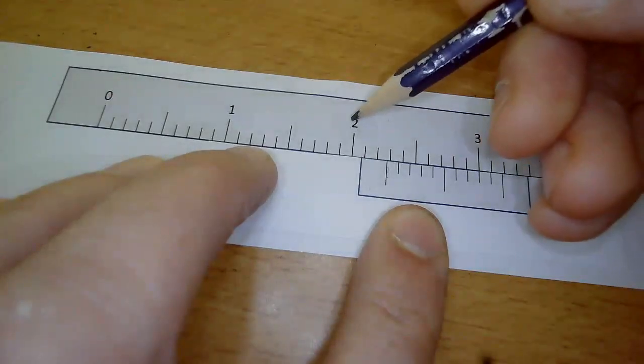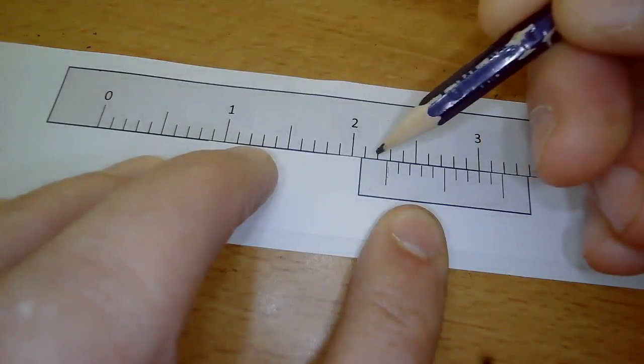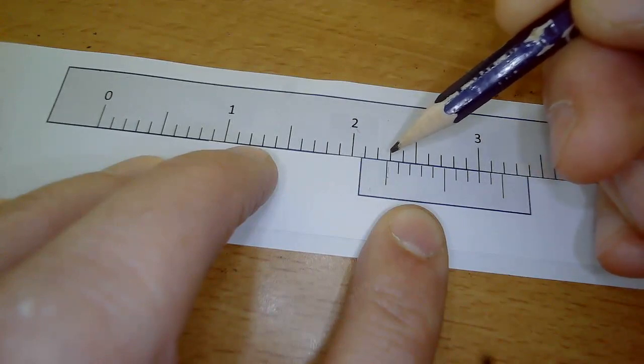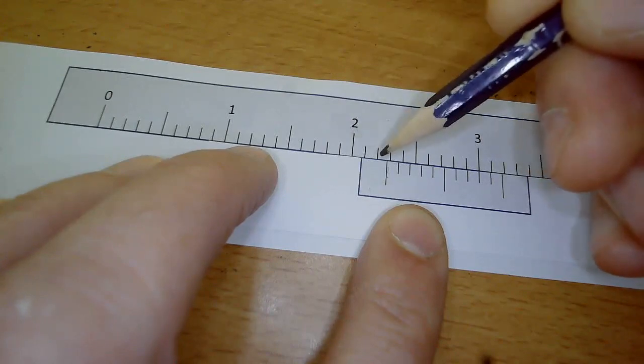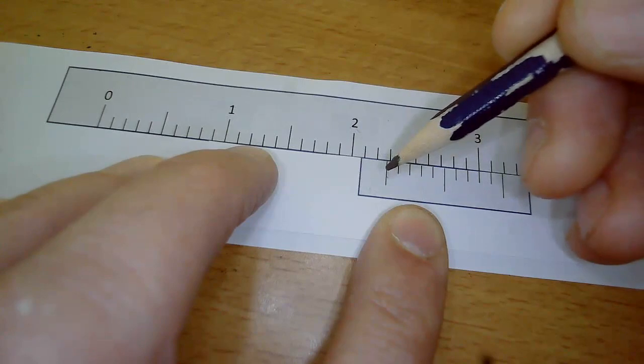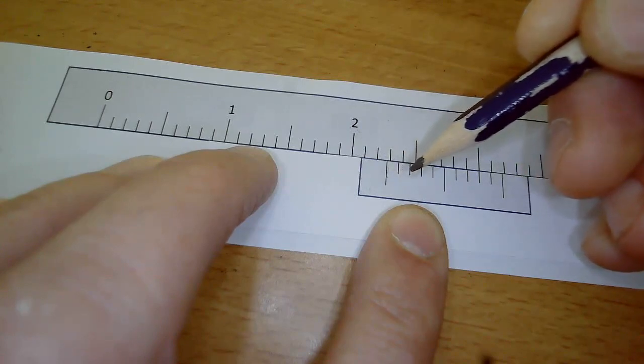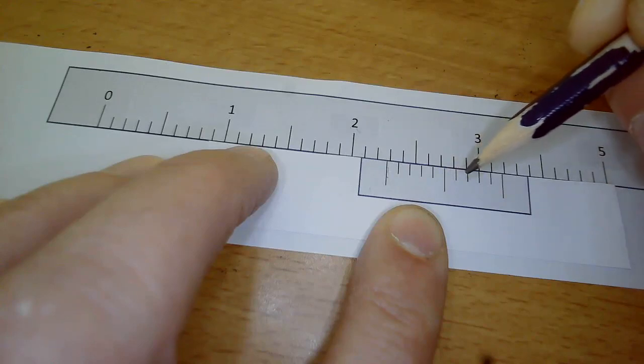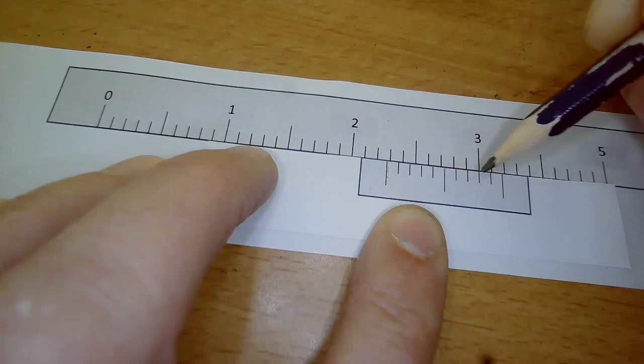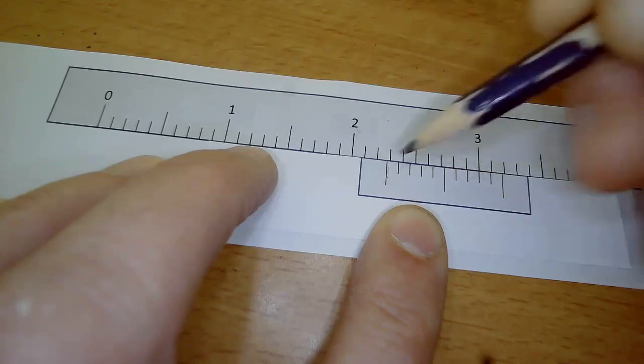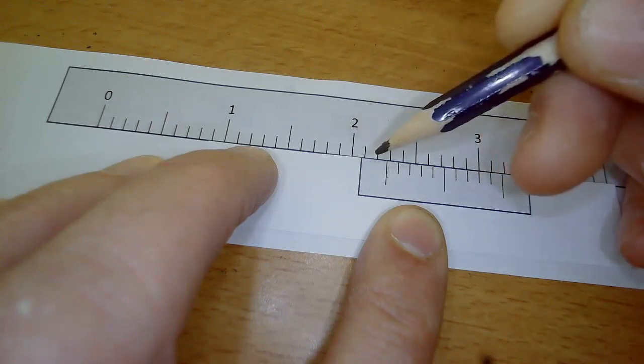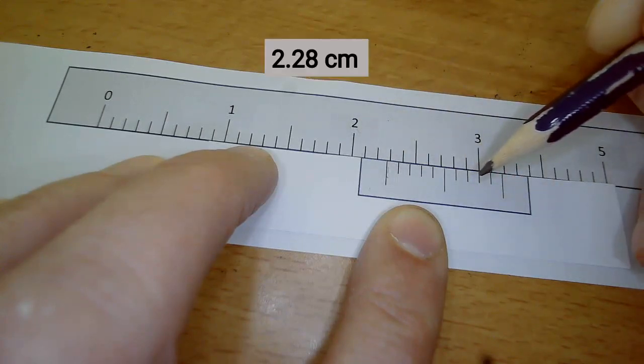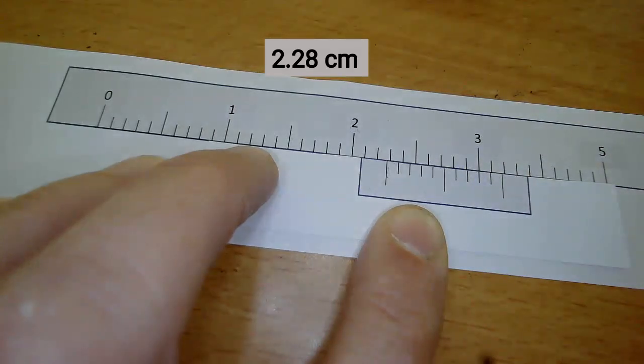Reading this one: it's 2.2 centimeters, hasn't reached the third millimeter mark yet. Then checking which mark lines up - 0, 1, 2, 3, 4, 5, 6, 7, 8 - the eighth one lines up, giving a measurement of 2.28 centimeters.